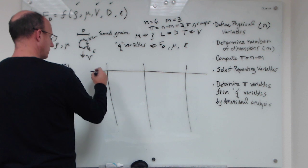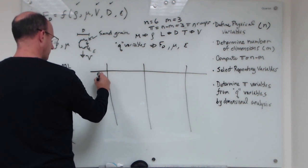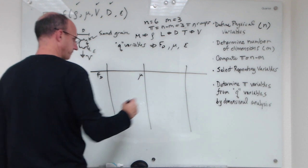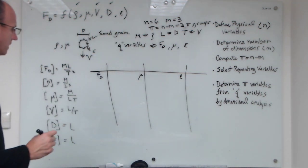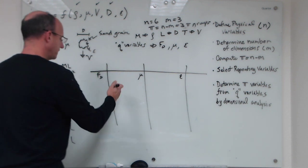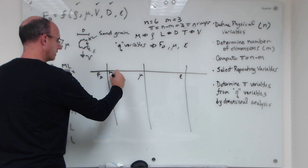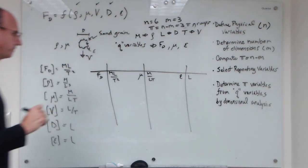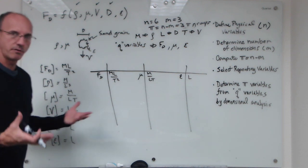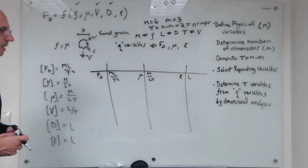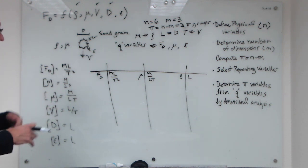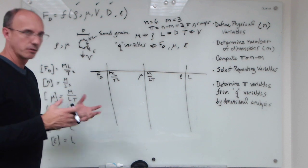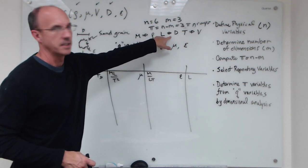I'll set up a table with the variable on the left and its dimensions on the right. Starting with drag force: dimensions are mass times length per time squared. Viscosity has dimensions of mass per length per time. Roughness has dimensions of length. I like to start by removing mass, then time, then length. Generally you want to start with the more dimensionally complex variables and work toward the simpler ones — in this case the simple length scale is nice to wrap up with.